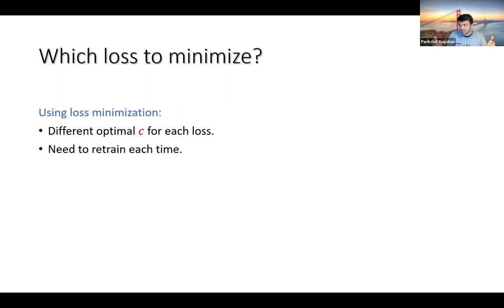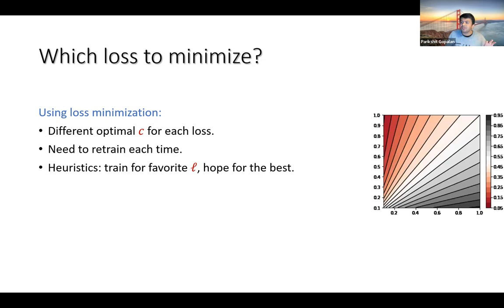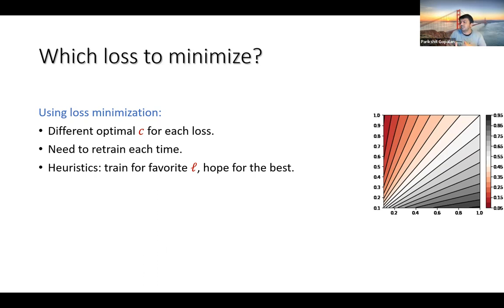If you're doing loss minimization, you might find there's a different optimal C for each loss function. There's no way to take the predictor you have for one loss function and do some transformation to get an optimal predictor for a different one. There are plenty of heuristics of this flavor, but there are no provable guarantees for these methods — for small changes to the loss function, the optimal hypothesis C can be fundamentally different.